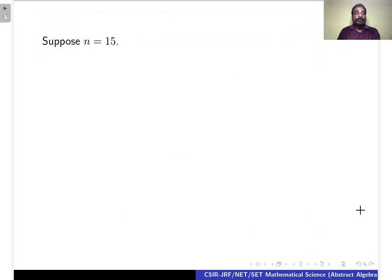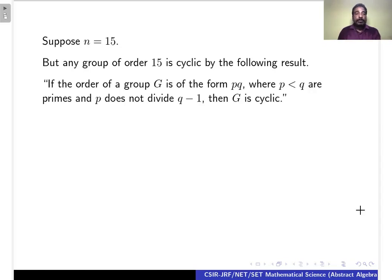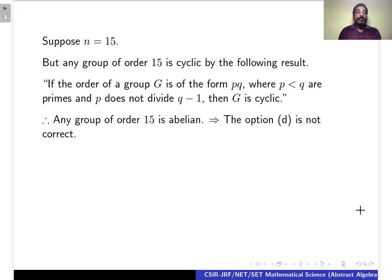Suppose N = 15. Any group of order 15 is cyclic by the following result: if the order of group G is of the form PQ where P < Q are primes and P does not divide Q − 1, then G is cyclic. Here 15 = 3 × 5, and 3 does not divide 5 − 1 = 4. Therefore, a group of order 15 is cyclic and hence abelian. Option D is also not correct.